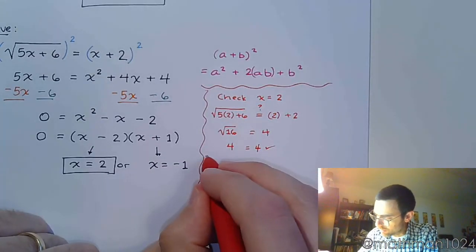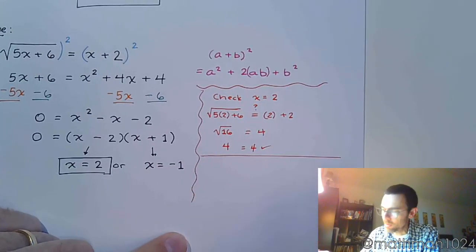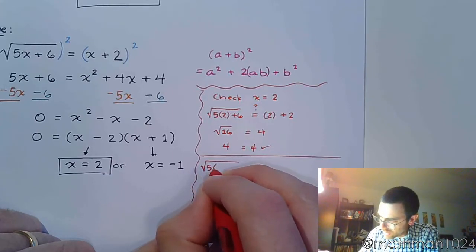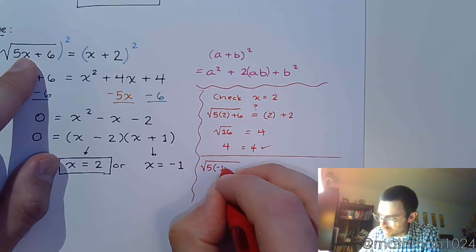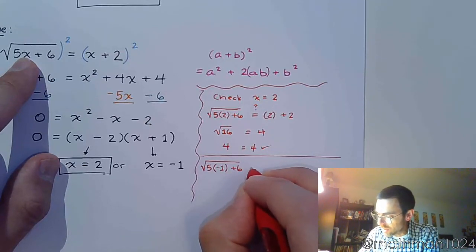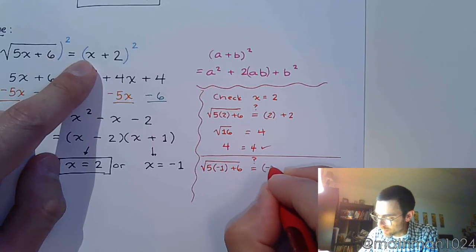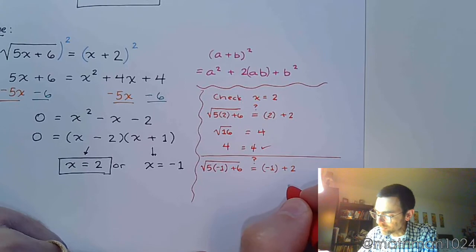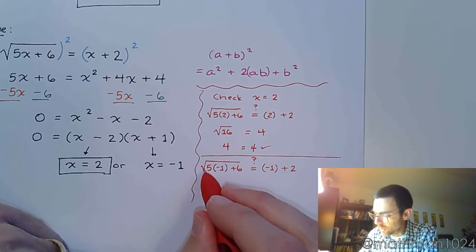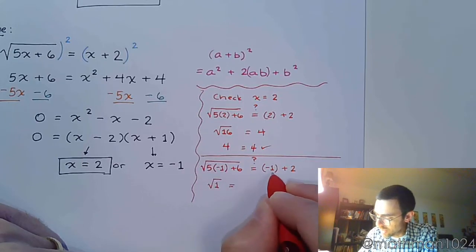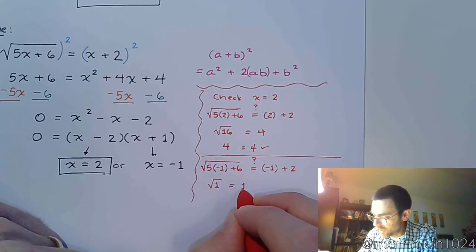I need to see if I do 5 times negative 1 plus 6. Does this equal negative 1 plus 2? All right. So that's going to give me negative 5 plus 6 is 1. Negative 1 plus 2 is positive 1.